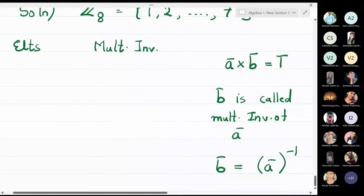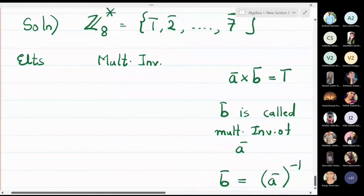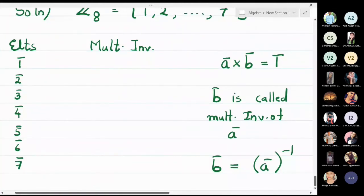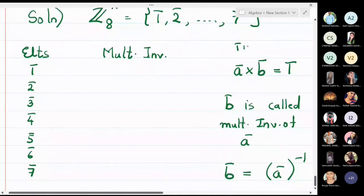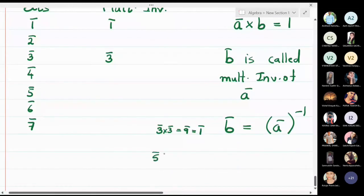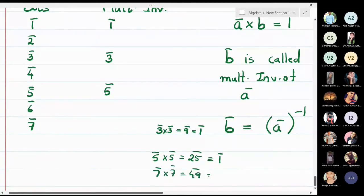The elements of Z₈ are 1̄, 2̄, 3̄, 4̄, 5̄, 6̄, and 7̄. Clearly 1̄ × 1̄ = 1̄, so 1̄ is its own inverse. For 3̄: 3̄ × 3̄ = 9̄ = 1̄ in Z₈, so the inverse of 3̄ is 3̄. For 5̄: 5̄ × 5̄ = 25̄ = 1̄ in Z₈, so 5̄⁻¹ = 5̄. For 7̄: 7̄ × 7̄ = 49̄, and 49 = 48 + 1, which is 1̄ in Z₈, so 7̄⁻¹ = 7̄.